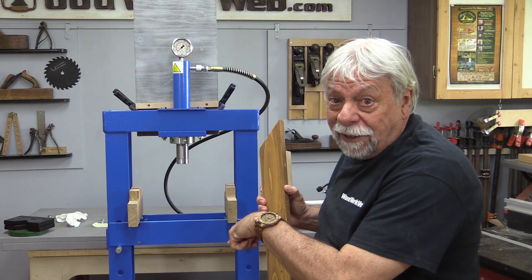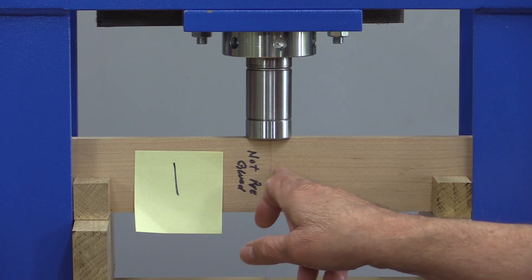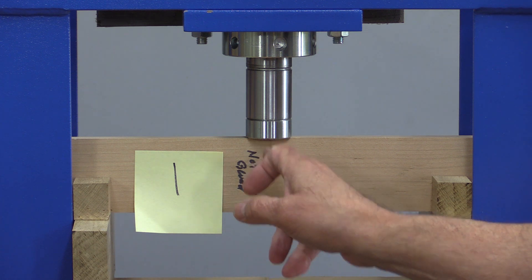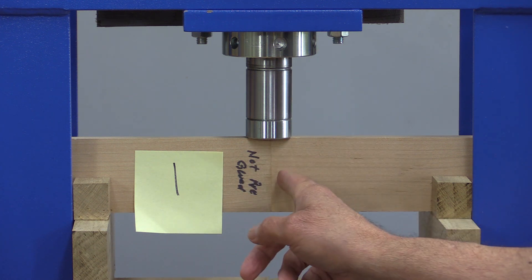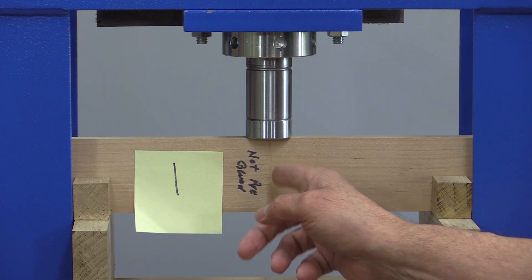So let's start off looking at these. Number one is the not pre-glued, so just put glue in there, clamp the two sides together. And I think this is probably going to be the weakest, but we'll have a look.